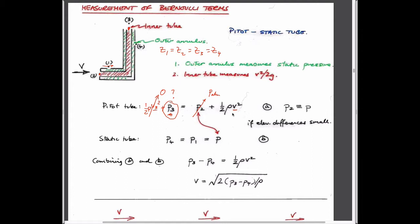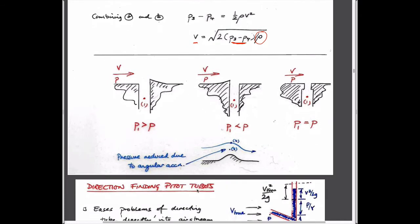The problem with Flight 447 going through that thundercloud was that the pitot tubes iced up. If ice blocks the tip of the tube, it doesn't tell you your velocity. Apparently the pilots panicked and made the plane stall, and it flew into the ocean. The solution is heated pitot tubes. Rearranging the Bernoulli equation, velocity is a function of the differential pressure between points 3 and 4, and the density of air.